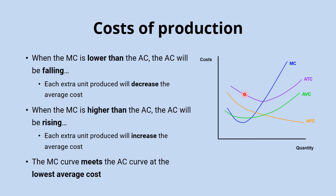What that means is that the marginal cost curve sits below the average cost curve up to the lowest point of that average cost curve. Across this range of output, marginal cost is below average cost, giving rise to the falling part of the average cost curve. The marginal cost curve then meets the average cost curve at its minimum point, and once marginal cost is above average cost it pulls the average cost up. So by definition, that average cost curve must be falling across this range and then increasing across the next range, making that U-shaped average cost curve.